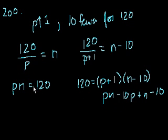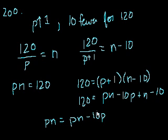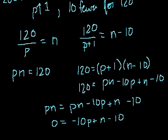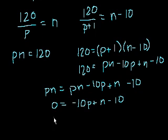And here, let's see, we can multiply. We have 120 is equal to p plus 1 times n minus 10. So that's equal to p times n minus 10p plus n minus 10. And so both of these are equal to 120, so we could set them to equal to each other, right? Both of these are equal to 120. So we could use both of these equations to say pn is equal to pn minus 10p plus n minus 10. So let's see if we can make any headway here. Seems like I might not. So I can subtract pn from both sides. So I get 0 is equal to minus 10p plus n minus 10. Let's see, I could add 10p to both sides and I get 10p is equal to n minus 10, OK?